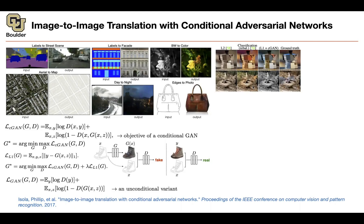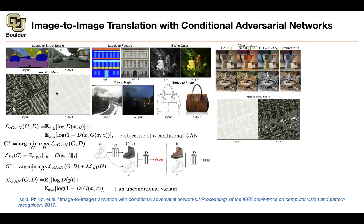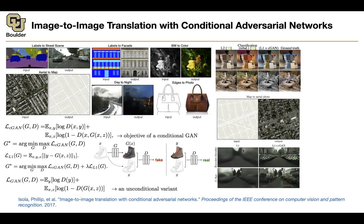As promised, you can apply this to colorization — this is the colorized version, these are the ground truth, and these are what L1 plus CGAN gives you. You can do map to aerial — these are your data and these are the model's predictions. You can also map labels to streets. If you use L1 only, things become blurry. If you add L1 plus CGAN, the GAN tries to imagine cars and other details.